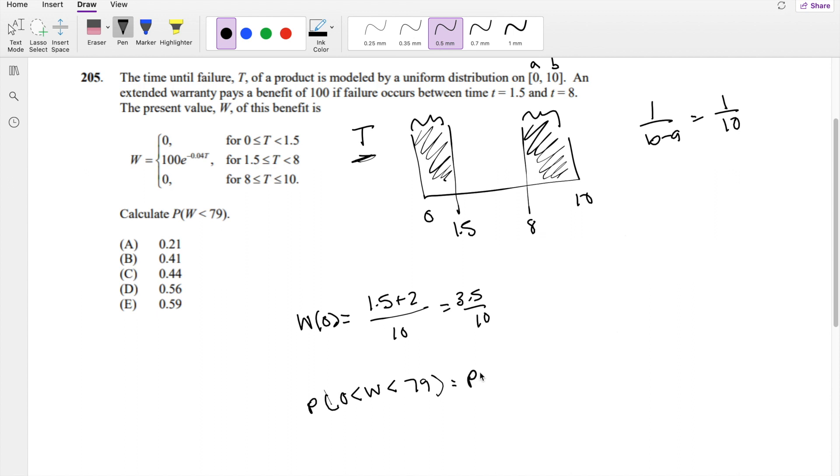0 is less than W, which is 100 e to the negative 0.04T, is less than 79. I can divide each side by 100. 0 is less than e to the negative 0.04T is less than 0.79.